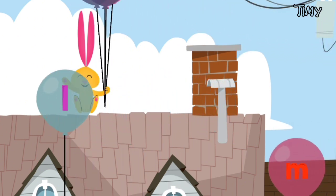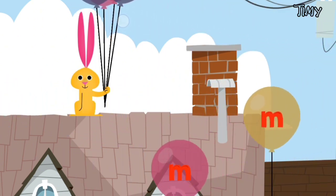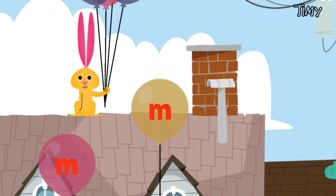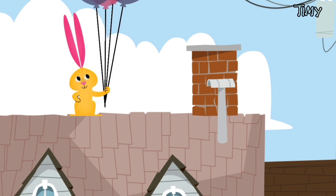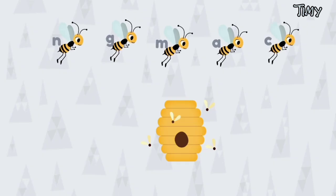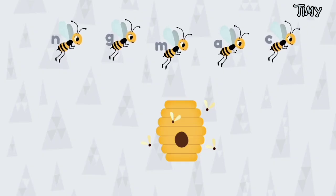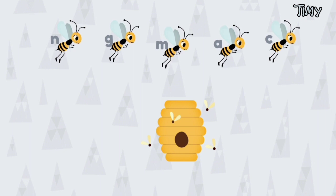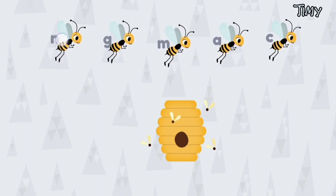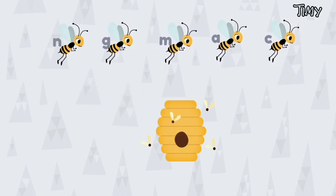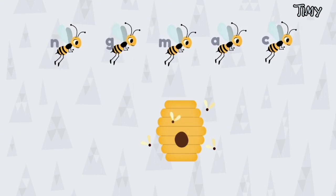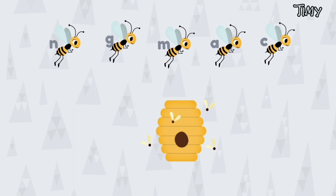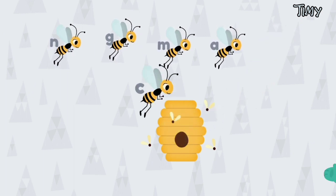Good work, you dragged the letter M to the rabbit! Help the bee with the letter C fly to the hive. Try again. That's right!